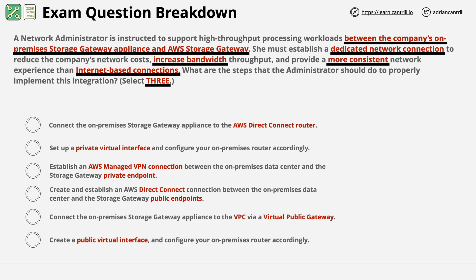Focus for a second on the structure of these answers. There are two solutions being presented: VPN and Direct Connect. And for Direct Connect, you have different options — public and private virtual interfaces. This is why topic knowledge is essential. You should know that Storage Gateway uses a public service endpoint — it connects to something in the AWS public space network. With that knowledge, anything which talks about private connectivity can be excluded.